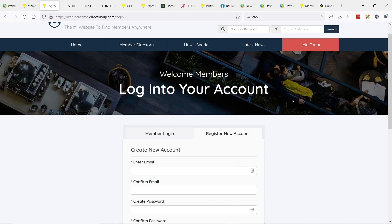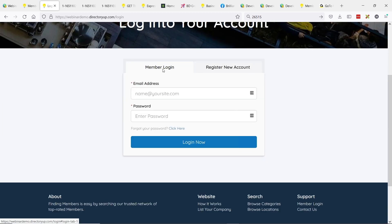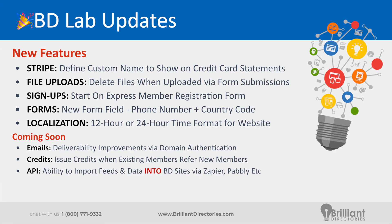Let's look at the member login page — it starts on register new account, and you can toggle to the member login tab. There is also a new form field type: the ability to have a phone number field plus a country code selector. Before, it was just a field where people entered their phone number. This new form field type has a dropdown where they can first select their country code, and then enter their phone number in the next input box.